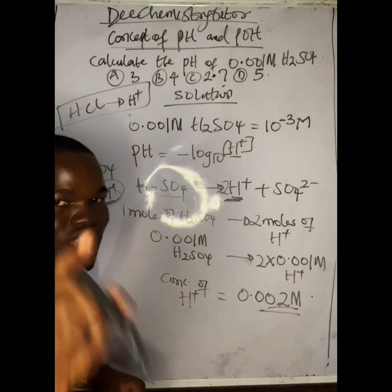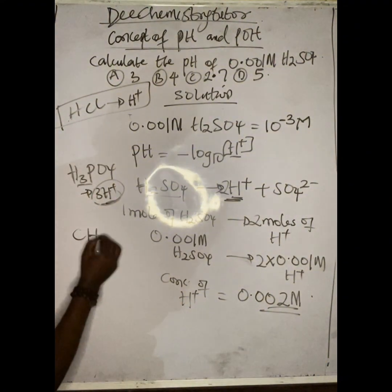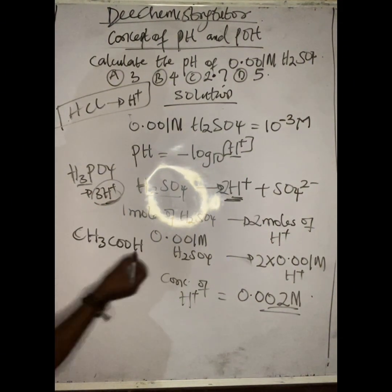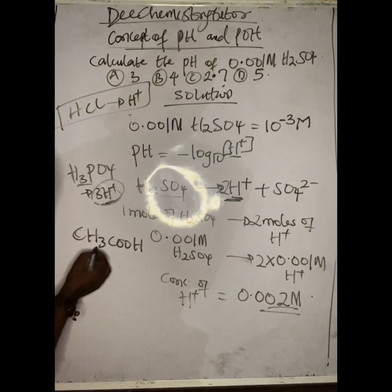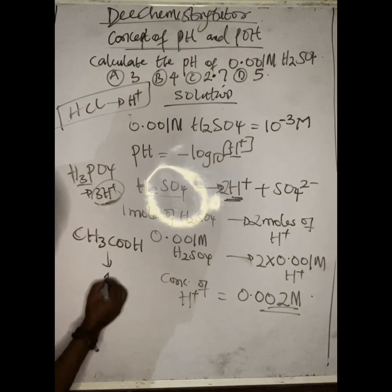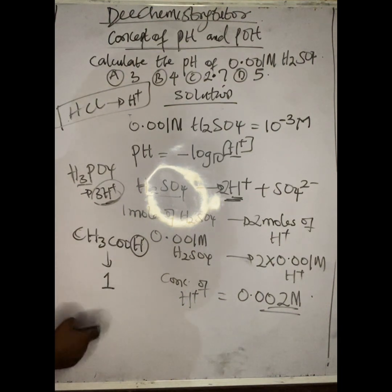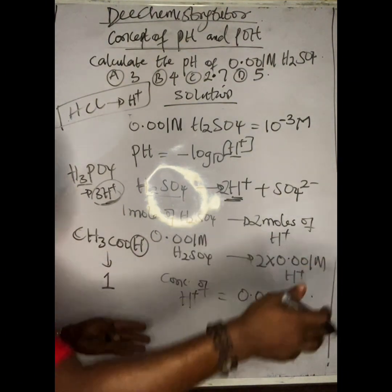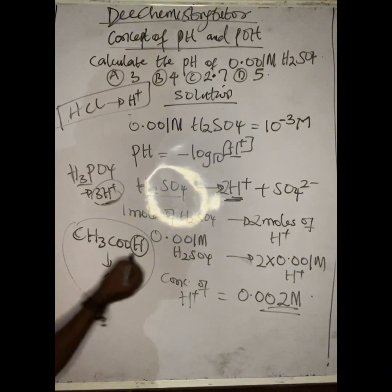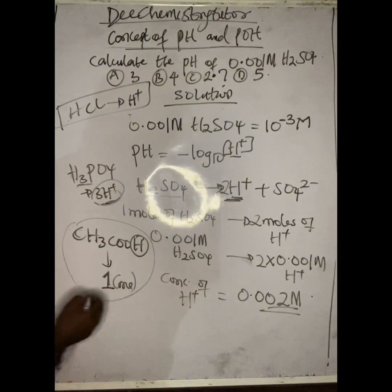A common JAMB question: what is the basicity of CH₃COOH (ethanoic acid)? Although there are four hydrogen atoms in the formula, the basicity is 1, because only one hydrogen — the one on the carboxyl group — is replaceable as a hydronium ion. Take note: the basicity of ethanoic acid is 1.